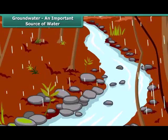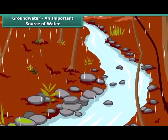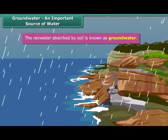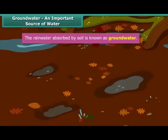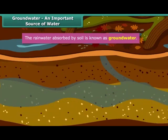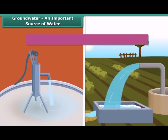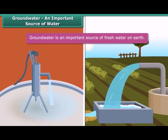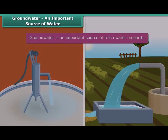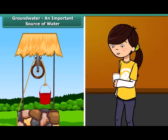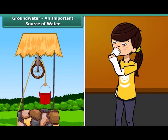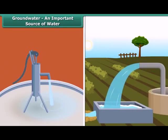Not all the rain water flows into rivers and ultimately into oceans. Some of it is absorbed by the soil. This water is known as ground water. Although it is not visible, it is almost everywhere, flowing beneath the ground under your home, cities, farms and deserts. Ground water is an important source of fresh water on earth. It is the source of water for many lakes and wells. Many of us drink ground water every day, because hand pumps and tube wells tap ground water to provide water for consumption.